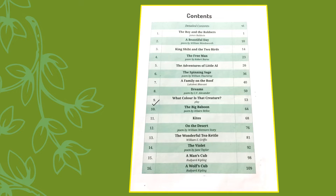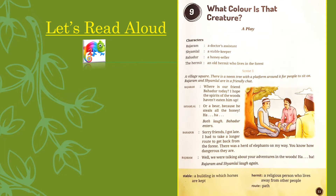By doing this, you will be able to know the pronunciation of difficult words and also improve your reading skills. So let us turn to Page No. 53 and read this play: 'What Color Is That Creature?' This chapter is a Play and in this Play we have 4 characters. Rajaram is a Doctor's Assistant — he works in a Clinic and assists, helps a Doctor.